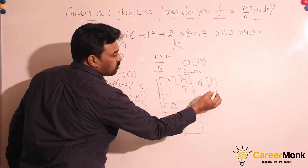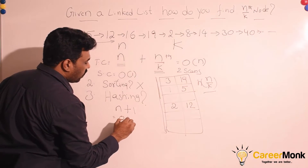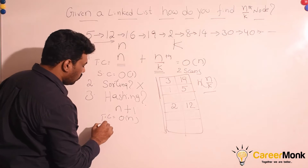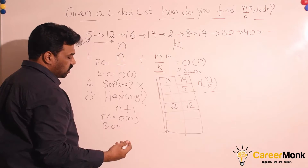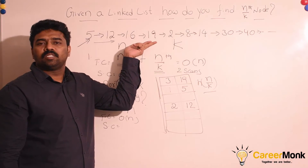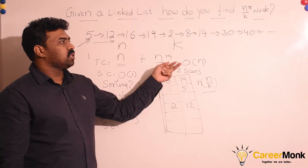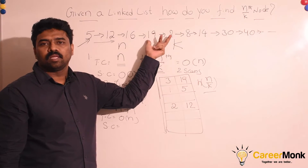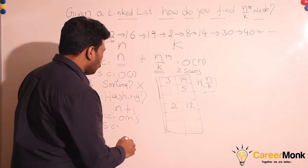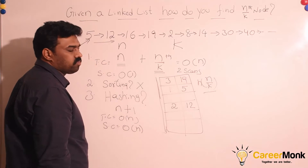The lookup complexity for the hash table is O(1), so the overall running time of this solution is O(n). What is the space complexity? Since we are inserting all elements of the linked list into the hash table, the size of the hash table depends on the input size. So the space complexity of this solution is O(n).